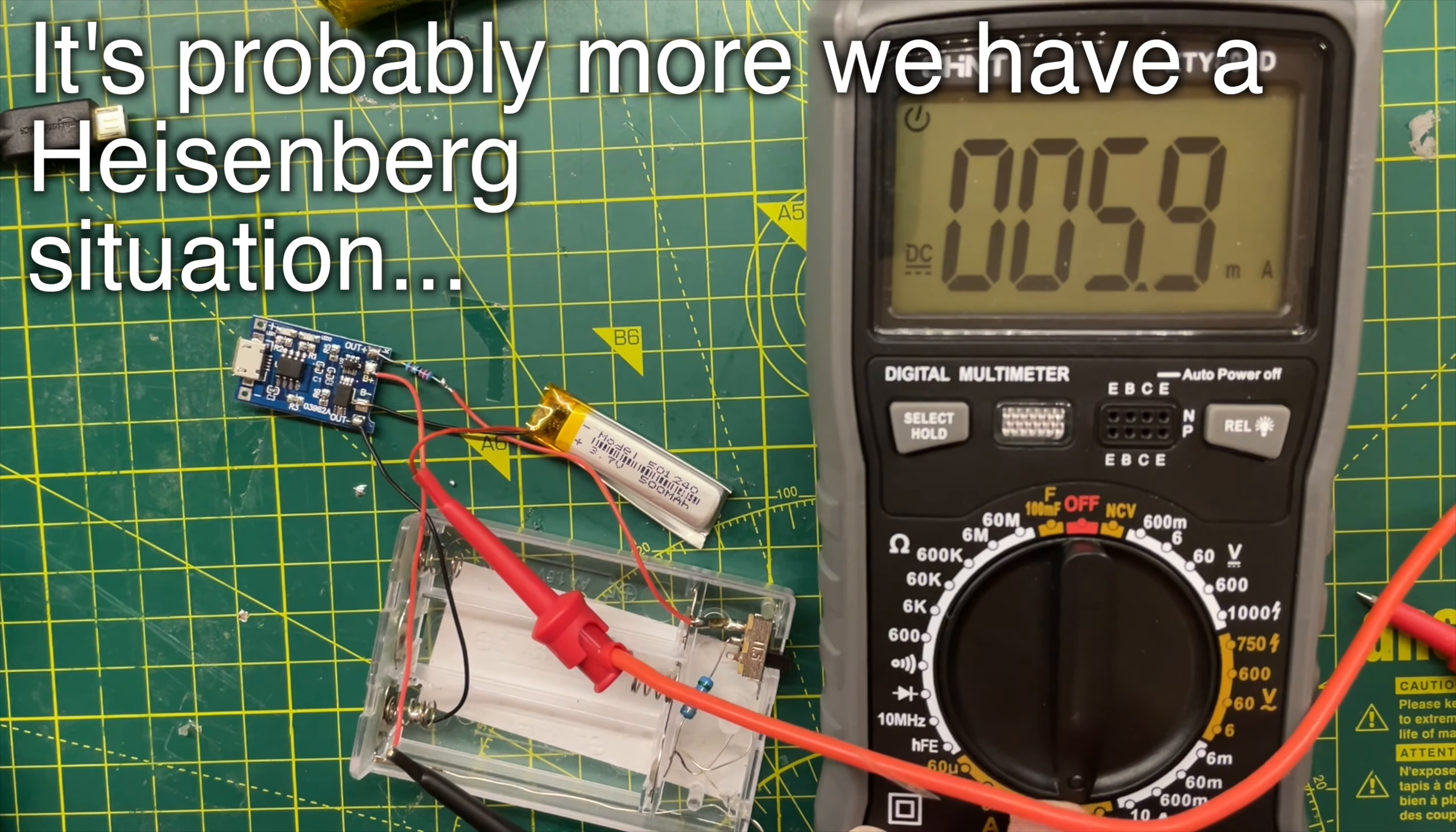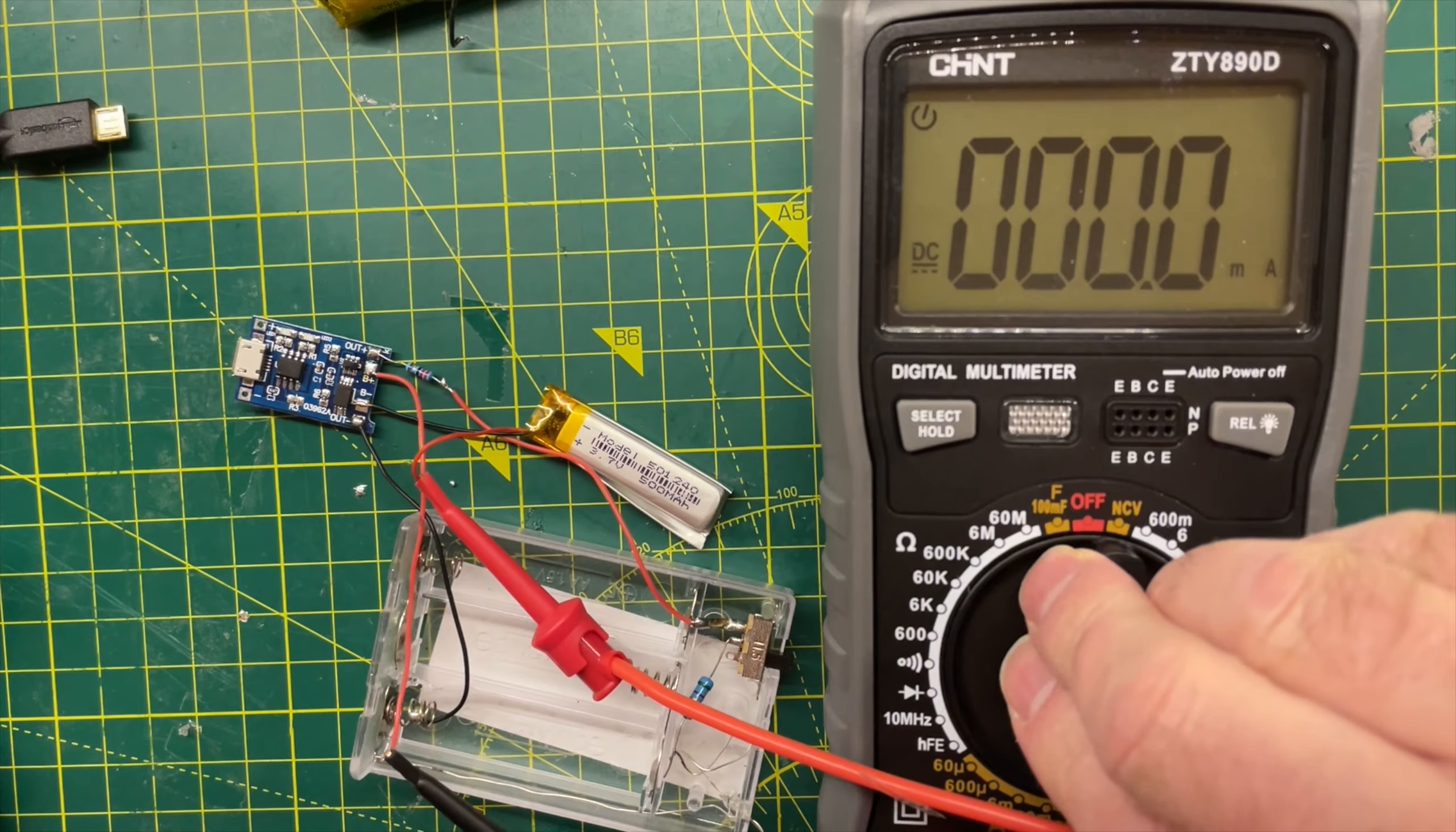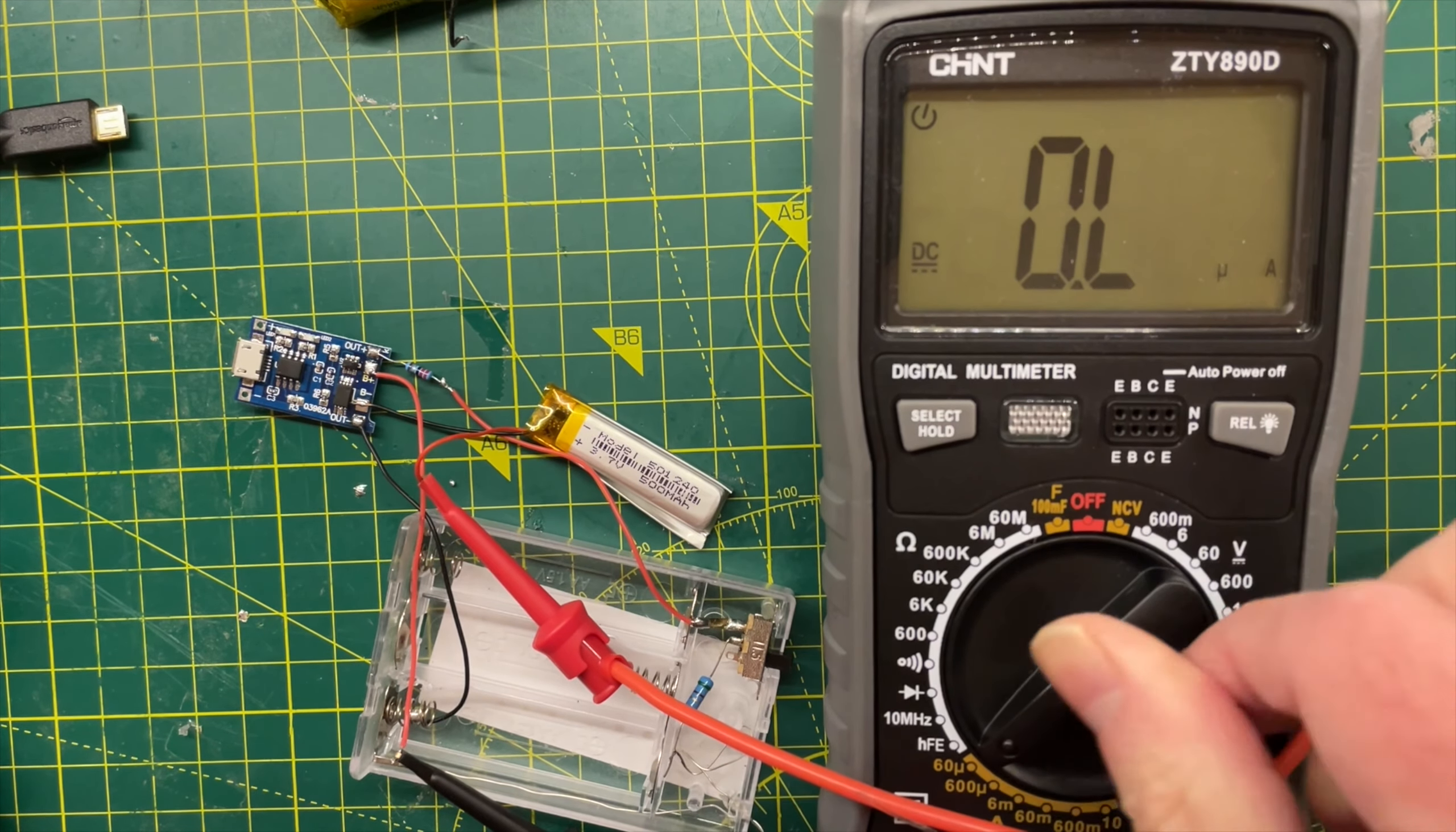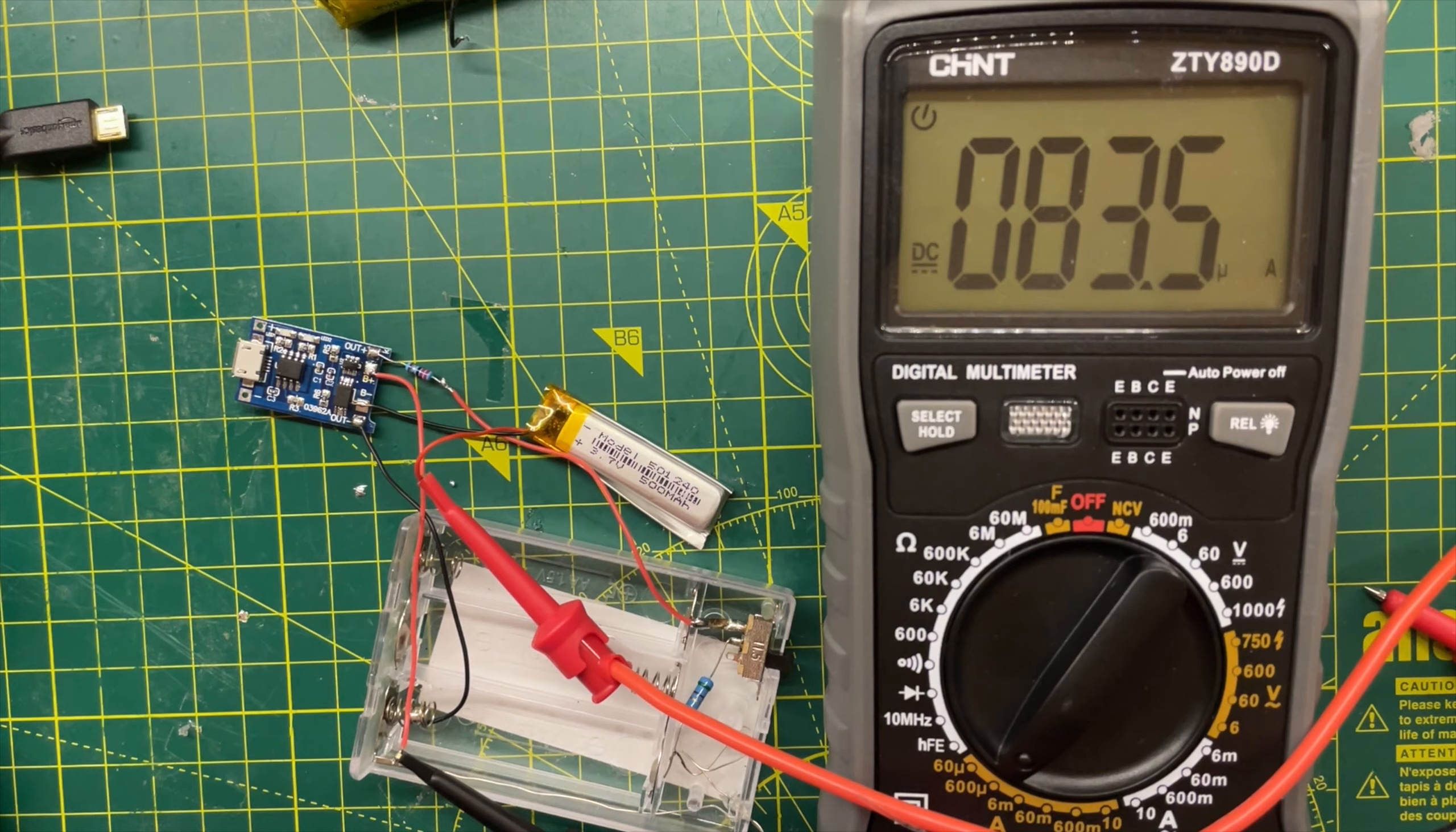But here's where it gets even more strange. If I break the connection between the battery and the board, the current returns to a much more normal amount. So my conclusion is, there must be something wrong with the TP4056 chip on this particular board. If I charge the battery and leave it connected, it will slowly drain the battery. But if I disconnect and reconnect the battery, everything is fine.